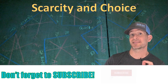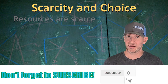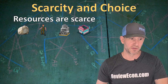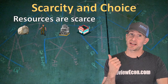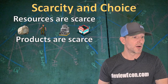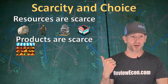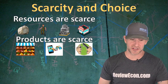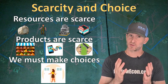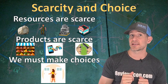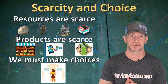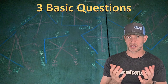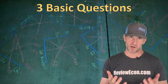In the last video, we talked about scarcity and choice. Resources are scarce — that means we don't have enough land, labor, capital, or entrepreneurship. And because those resources are scarce, products are also going to be scarce — those are physical products, virtual products, or services. Since resources and products are scarce, we are forced to make choices. As we'll learn in a future video, those choices have costs, and we call those costs opportunity costs. Since we are forced to make choices, societies organize themselves in economic systems, which is what this video is all about.